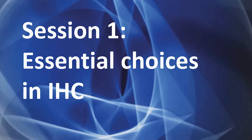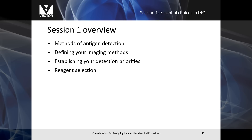In this section, we're going to be covering essentials of immunohistochemistry. Some of these essentials are methods of antigen detection, defining your imaging methods, establishing your detection priorities, and selecting reagents.